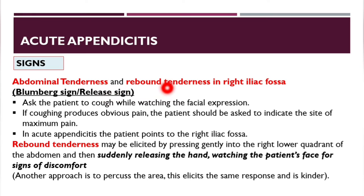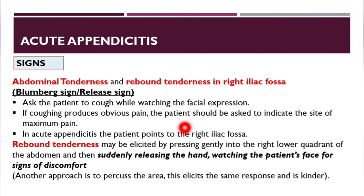Abdominal tenderness and rebound tenderness in the right iliac fossa constitute the Bloomberg sign (release sign). To elicit it, ask the patient to cough while watching facial expression — if coughing produces obvious pain, ask the patient to indicate the site, and in acute appendicitis they will point to the right iliac fossa. Rebound tenderness is elicited by pressing gently on the right lower quadrant then suddenly releasing; pain on removal is positive. Percussion in the same area produces a similar, kinder response.